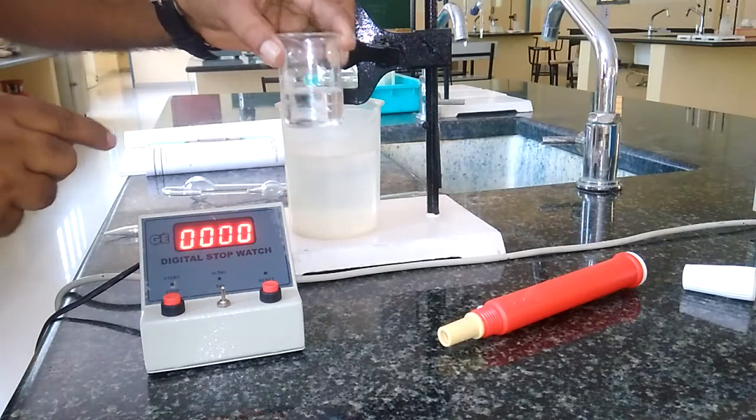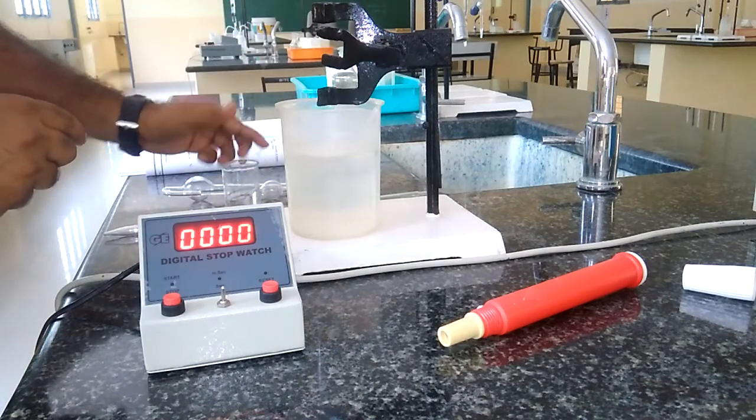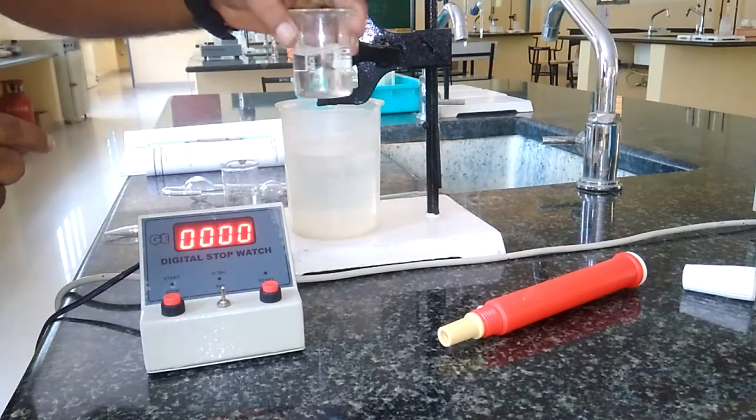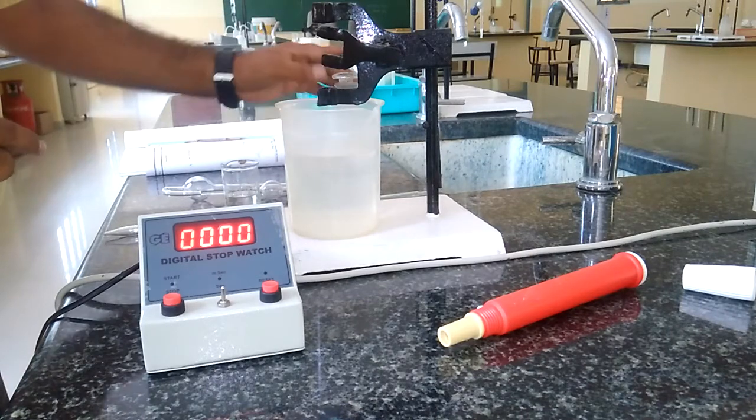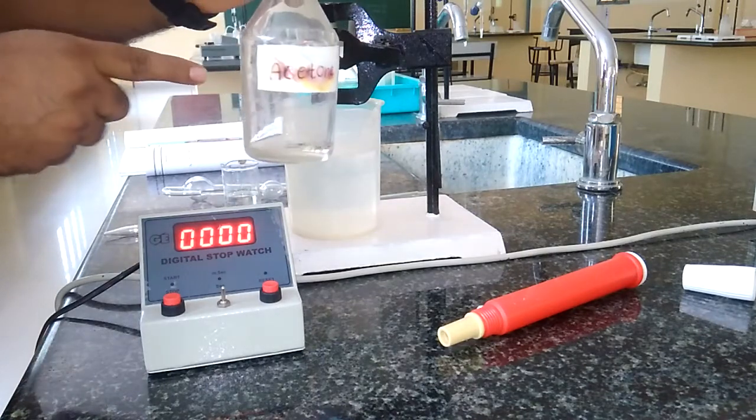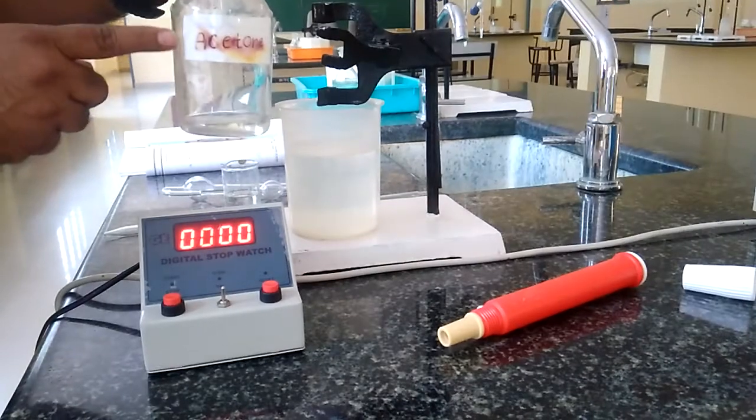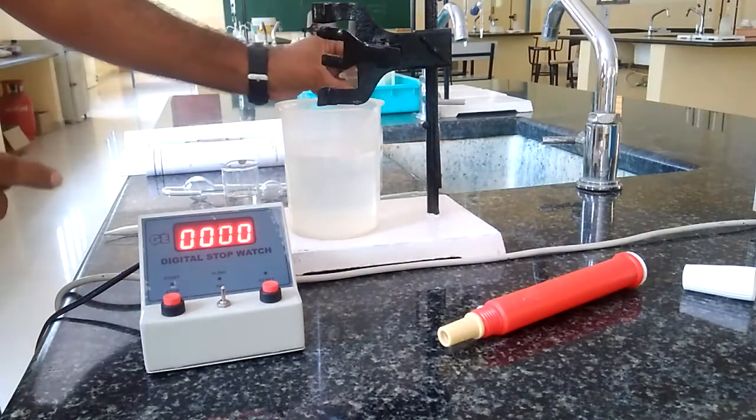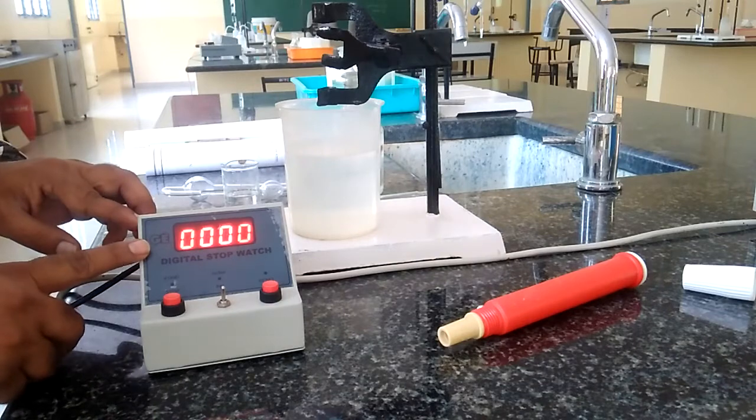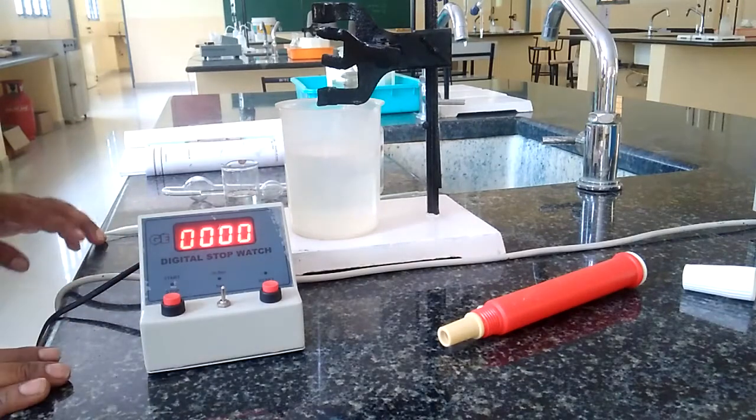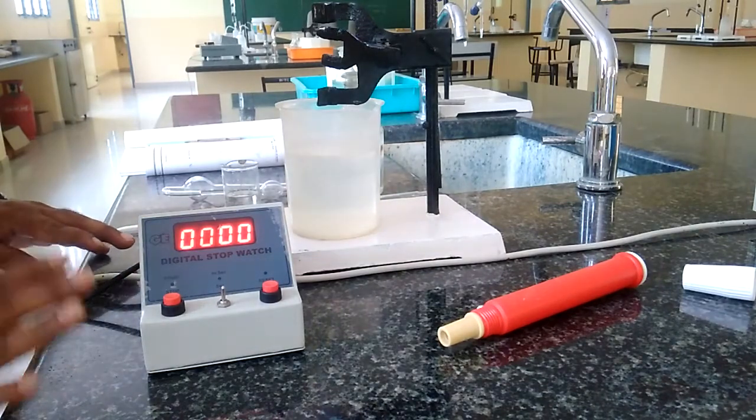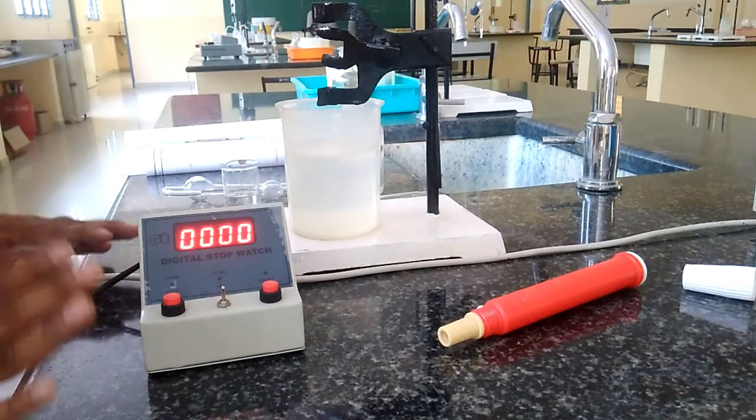Some of the chemicals we require here: the organic liquid is actually benzene, reference water we need, and acetone which is a cleaning agent to rinse the viscometer. We also need this digital stopwatch. These are the requirements, chemicals and devices we require to do this experiment.